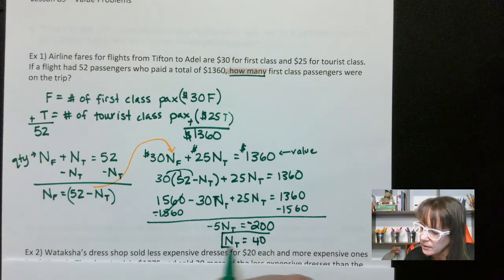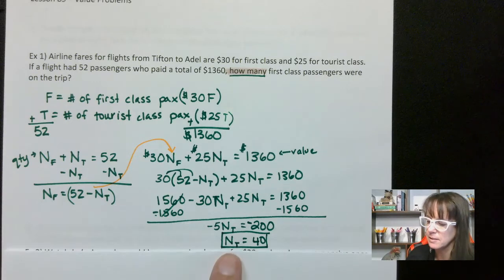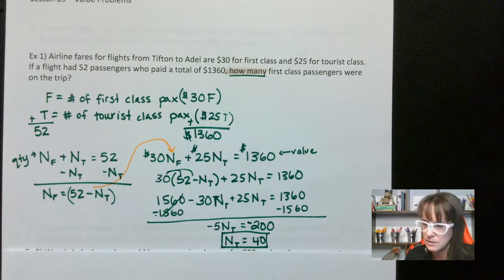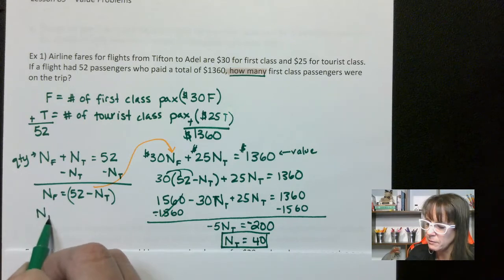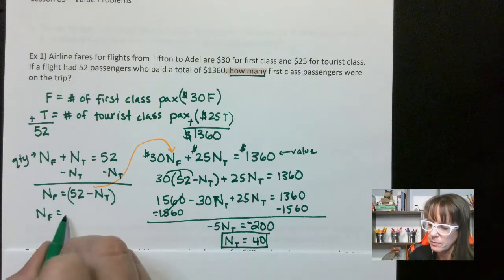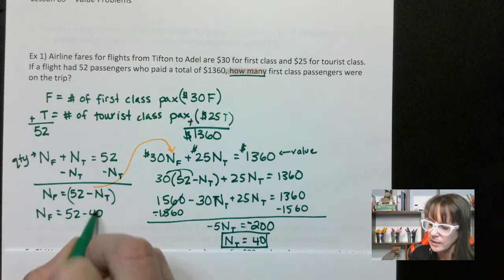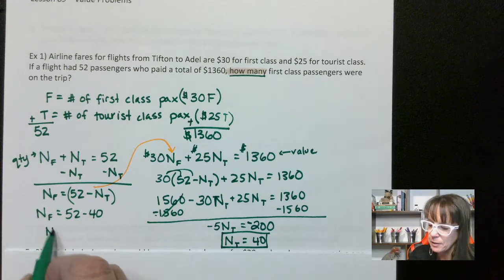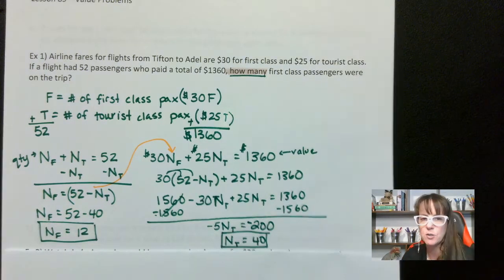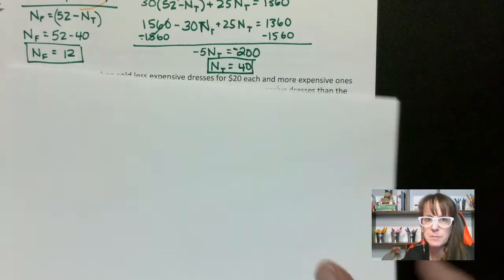So the number of tourist class passengers is 40 — you'd want to write a complete sentence. For the number of first class passengers, we take 52 minus 40, so the number of first class passengers is 12. All right, let's try another one of these problems.